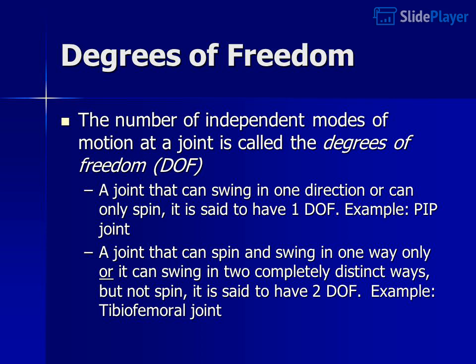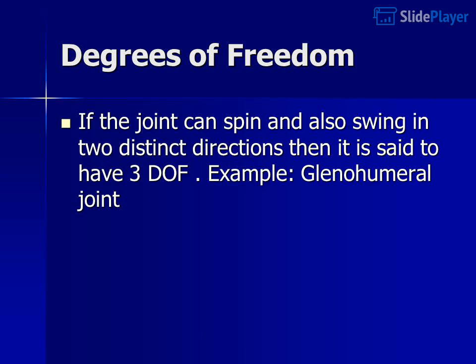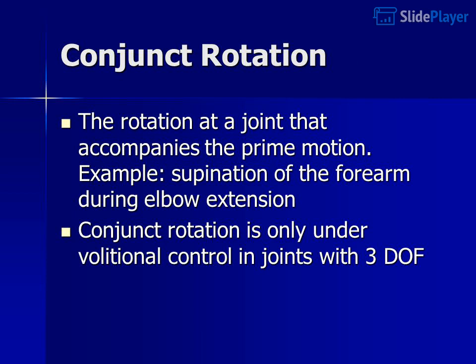Degrees of freedom. The number of independent modes of motion at a joint is called the degrees of freedom, DOF. A joint that can swing in one direction or can only spin is said to have one DOF — example: the PIP joint. A joint that can spin and swing in one way only, or can swing in two completely distinct ways but not spin, is said to have two DOF — example: the tibiofemoral joint. If the joint can spin and also swing in two distinct directions, it is said to have three DOF — example: the glenohumeral joint. Conjunct rotation is the rotation at a joint that accompanies the prime motion — example: supination of the forearm during elbow extension.